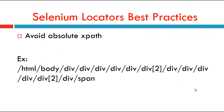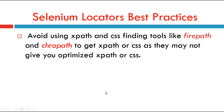Avoid absolute XPath. Your context element span will not be accessible if any parent element is added or removed. Avoid specifying the complete HTML tree. You should look for relative XPath points as close as possible to your element. Also avoid using XPath and CSS finding tools like FirePath and CrowPath to get XPath or CSS, as they may not give you optimized XPath or CSS.